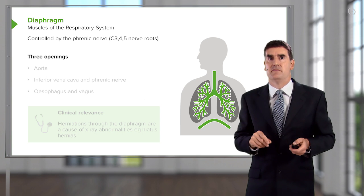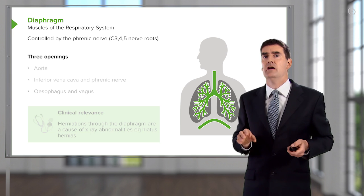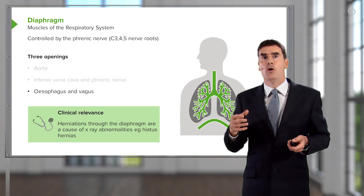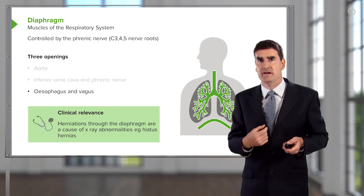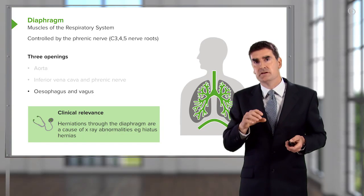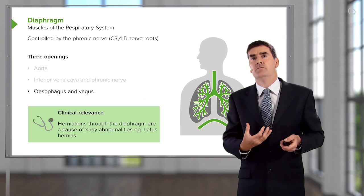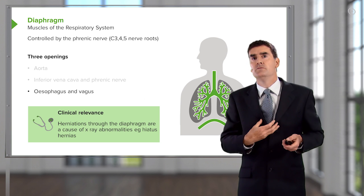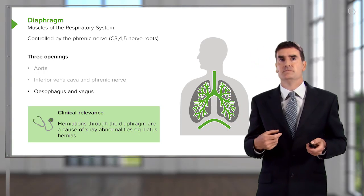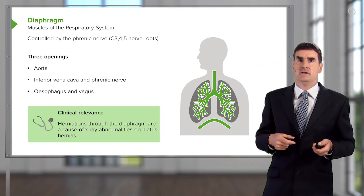There are three openings in the diaphragm, and these are important because they are sites of herniation. For example, a hiatus hernia often comes up through the opening for the esophagus and the vagus, posteriorly behind the heart, and is visible on a chest X-ray. The hiatus hernia represents the stomach moving through the diaphragmatic opening into the thoracic cavity. The other openings are for the aorta and the inferior vena cava.